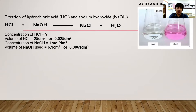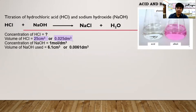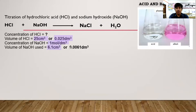The volume of hydrochloric acid used is 25 cm³. Convert that to dm³ by dividing by 1000: 0.025 dm³. The concentration of sodium hydroxide is 1 mol/dm³. The volume of NaOH used in the titration is 6.1 cm³, which is 0.0061 dm³.